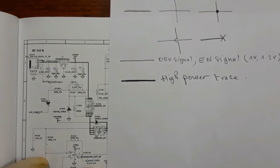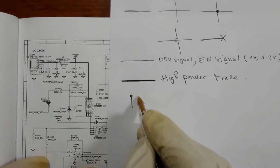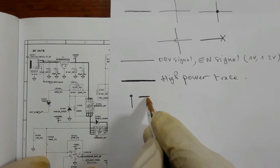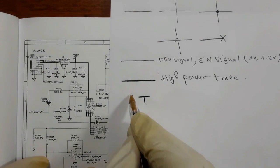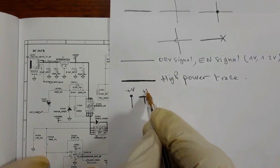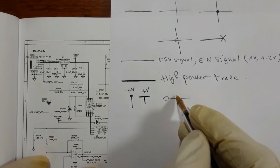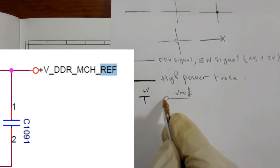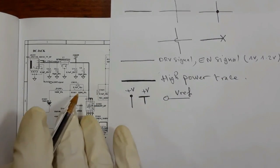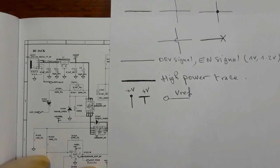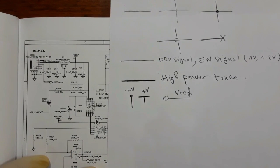So if you find this symbol in the motherboard, it means this is a voltage terminal — here we have plus V, and here we have plus V. But if you find it like this with a circle, a line with a circle means V reference. We will see all this in the schematic and in the motherboard. Don't worry, I'm going to teach you step by step until you become a professional.